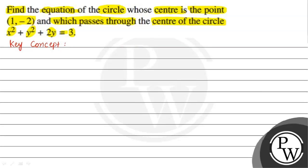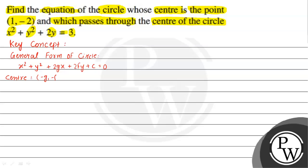The first form is the general form of a circle, given by x squared plus y squared plus 2gx plus 2fy plus c is equal to 0. Here the center coordinates are (−g, −f) and the radius is equal to the square root of g squared plus f squared minus c.